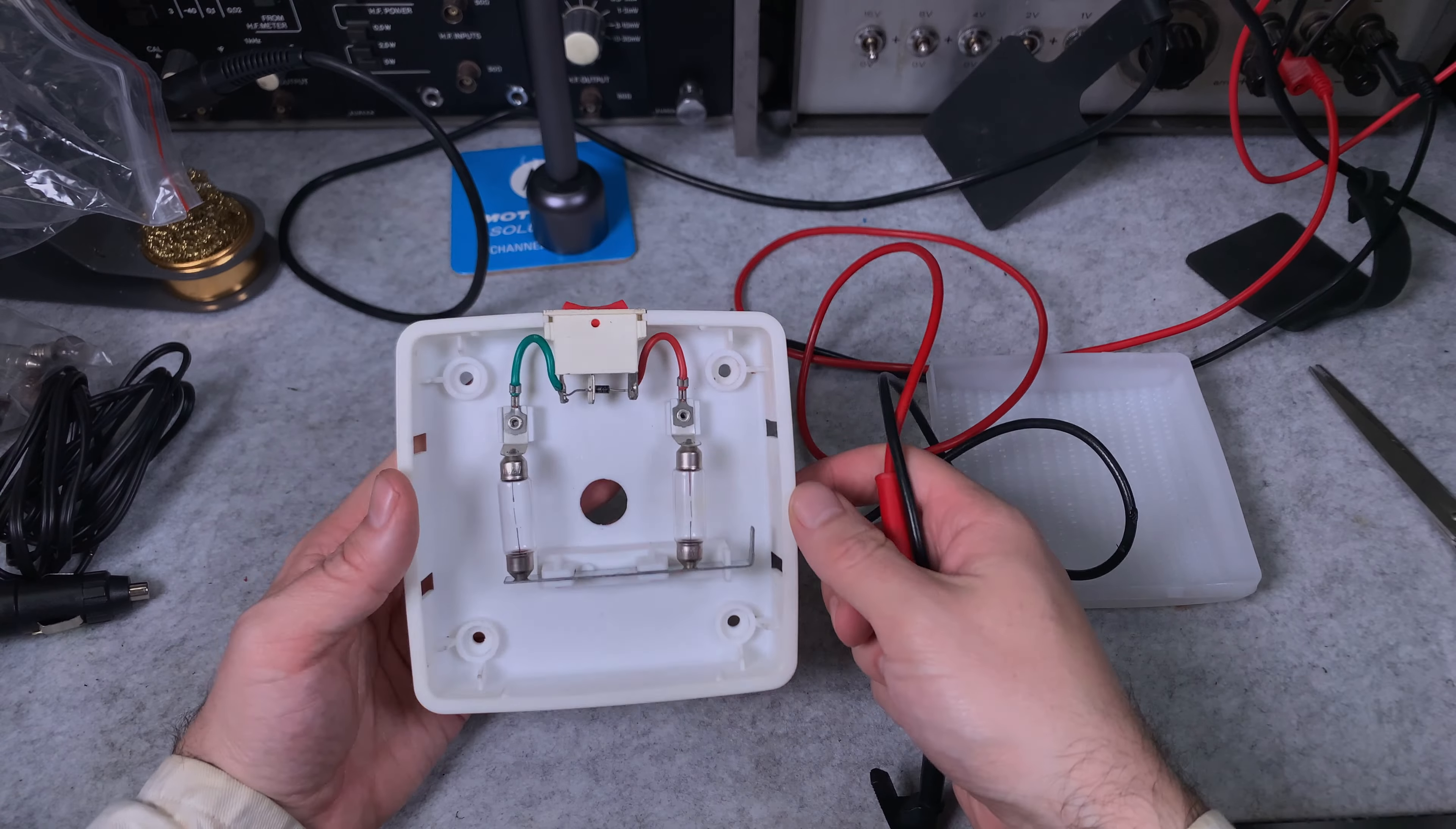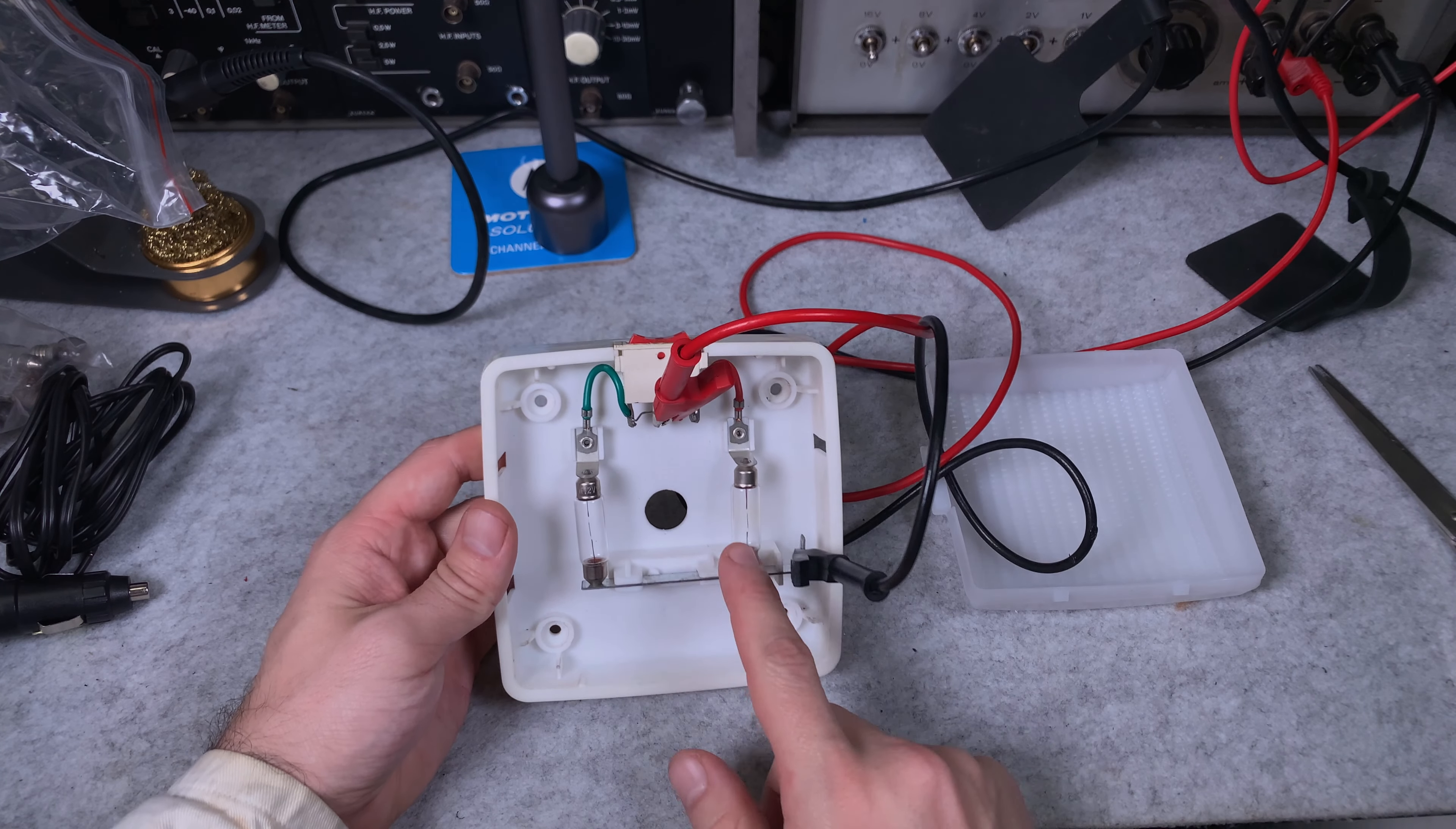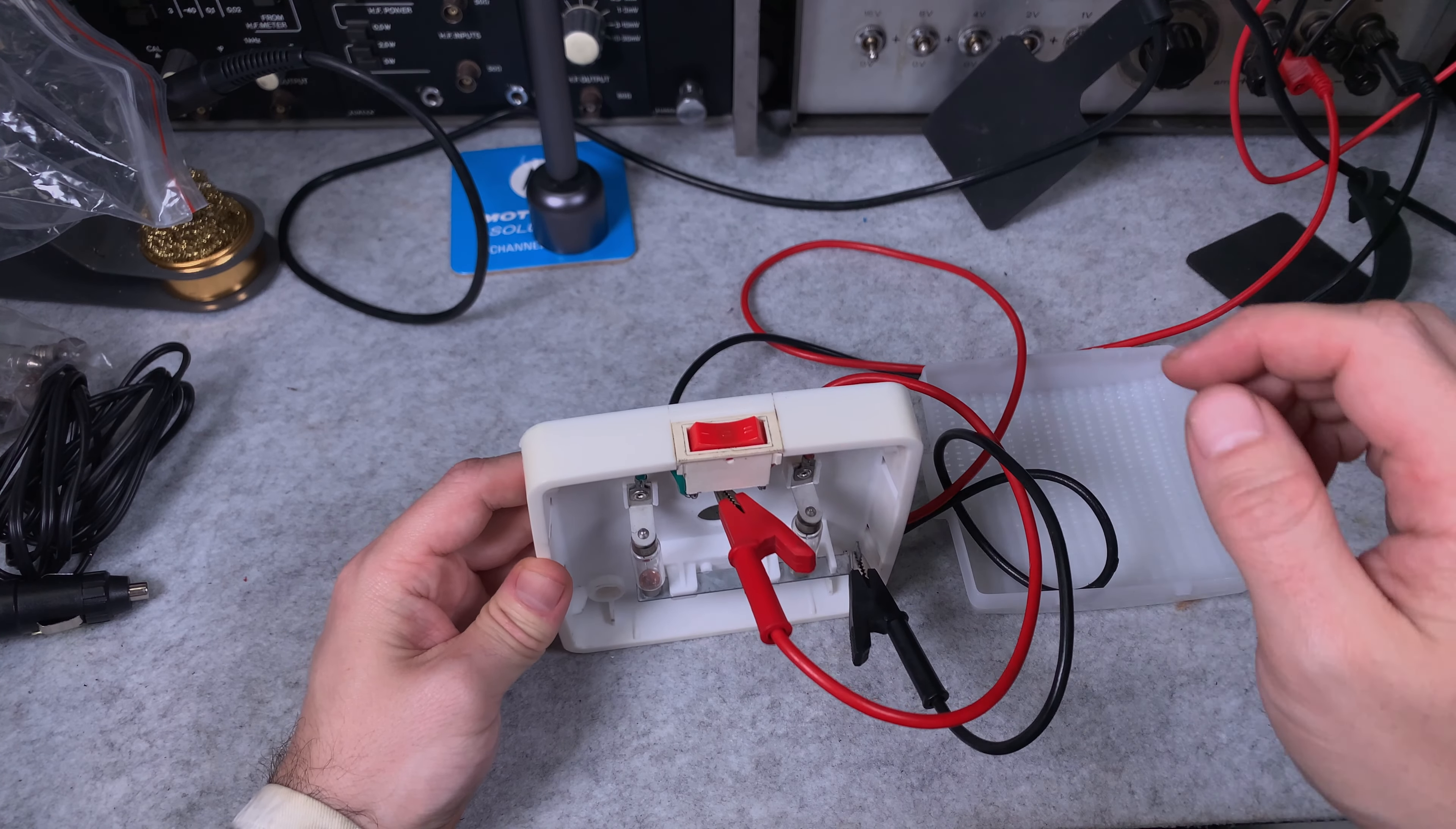Let's try to hook it up to my power supply and see how it's going to be working. I assume the positive will go into the center terminal and the negative, the common ground, to the common one. Let's power up the bench power supply. We are on 12 volts, 3 amps.